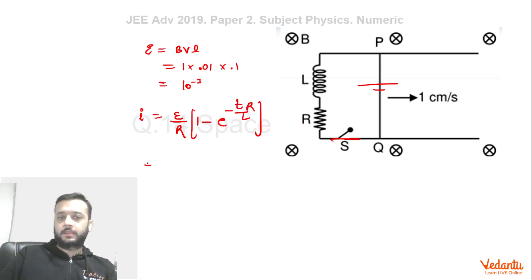Okay. So just put the values 10 to the power minus 3, resistance is 1. The time at which we have to find the current is 10 to the power minus 3 only, milliseconds. Inductance is 10 to the power minus 3 and resistance is 1.